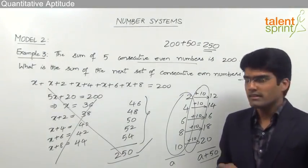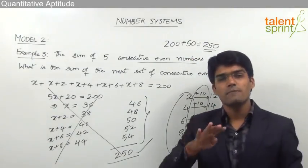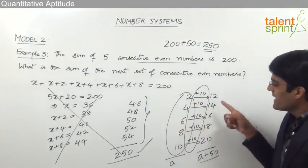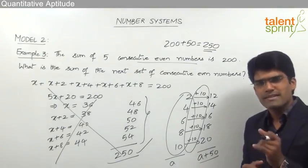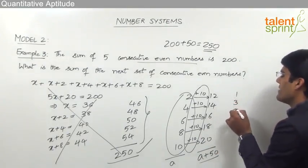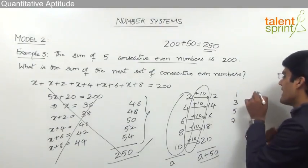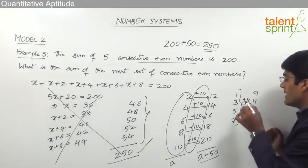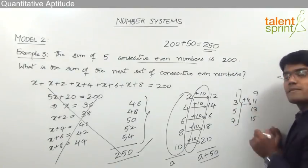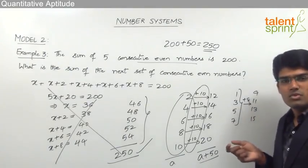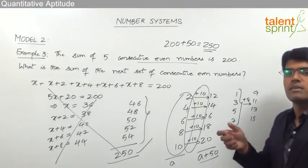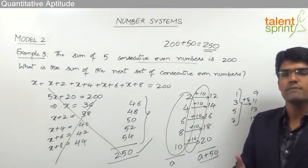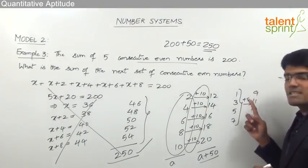Before moving on, there is an important point. For 5 numbers the sum increases by 50, but that does not mean for 4 numbers the sum increases by 40 — that would be wrong. When there are only 4 numbers and you take the next 4, each number increases by 8, not 10. For example, 1, 3, 5, 7 and the next set 9, 11, 13, 15 — each number increases by 8, so the total increases by 4×8 = 32.